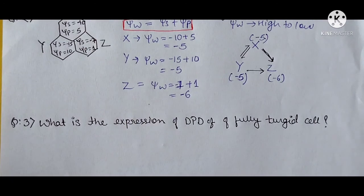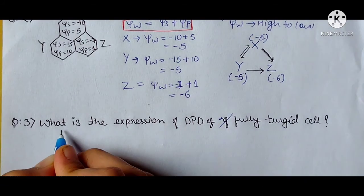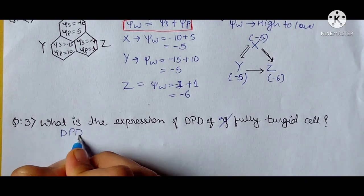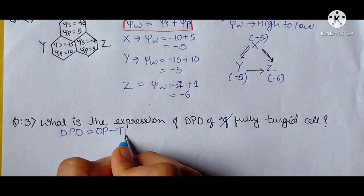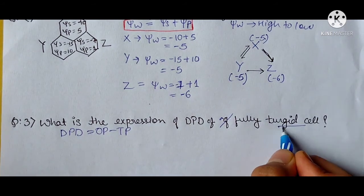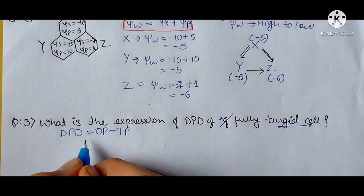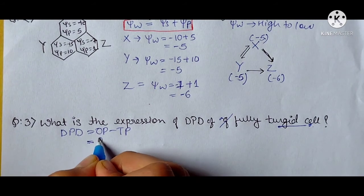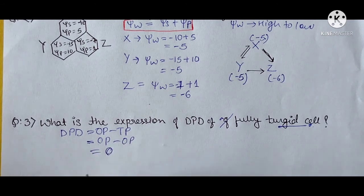Question: What is the DPD of a fully turgid cell? DPD = OP − TP. In a turgid cell, OP and TP are equal, so DPD = 0.